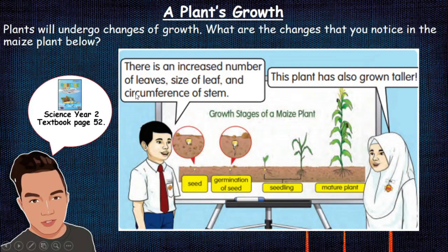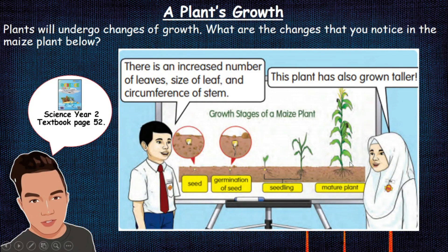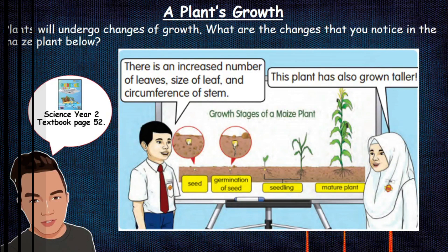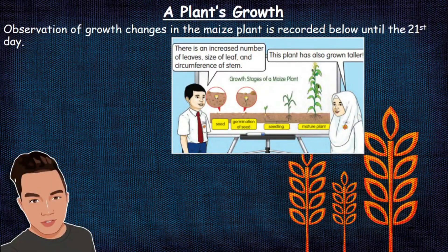The final one will be the circumference of stem. Do you understand what circumference of stem means? Circumference means 'ukur lilit' and stem means 'batang' — so 'ukur lilit batang'. The circumference of the stem also increases. As you can see, look at the stem — from small it becomes big and bigger. And it is very obvious that this plant has also grown taller, as usual the plant grows taller and taller.